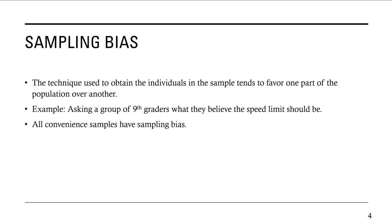All convenience samples have sampling bias. Convenience samples are those samples that you take because they're easy to take. So anytime you sample people because they're easy to reach, or they self-select and voluntarily participate, you have sampling bias. Usually when people volunteer, they have strong opinions about something, and that's where the sampling bias comes from.